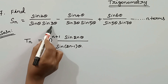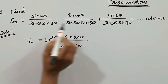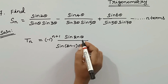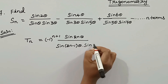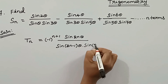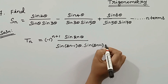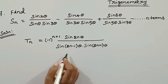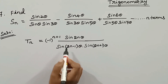Next, the denominator has 3, 5, 7 — the odd numbers starting at 3. How to mark the term, as in previous videos: it is sin(2n+1) theta. Now this is the general term.